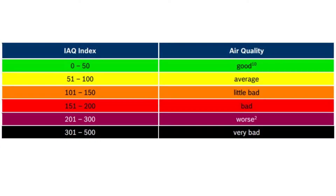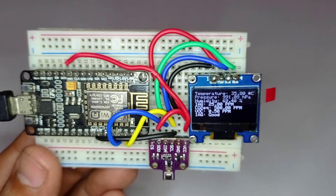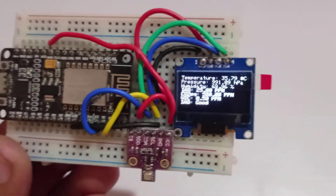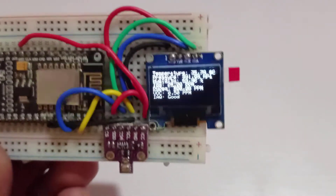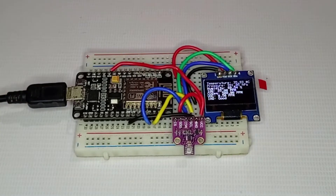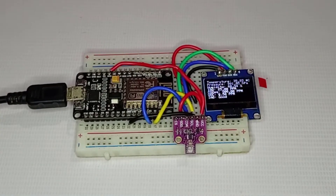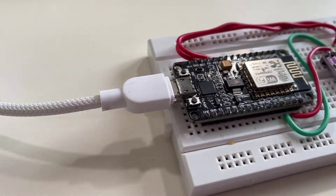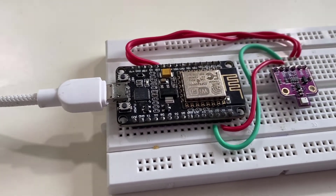The BME680 can measure the air quality index from 0 to 500 PPM, and here is the reference table. For this indoor air quality monitoring system the main component is the NodeMCU development board. You can also use any other ESP8266-based board like the Wemos D1 Mini — all these boards have the ESP8266 chip with built-in Wi-Fi that can upload data to the internet or a server.